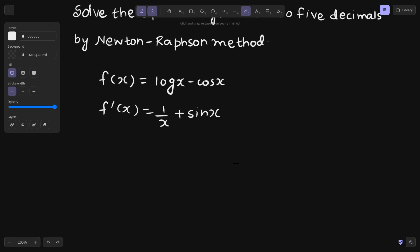Now let's check where the root lies, in what interval. If I check for starting with value 1, because log 0 is not defined, so if I start with 1, log 1 is 0 and cos 1, negative of cos 1. So f of 1 is minus 0.54030.